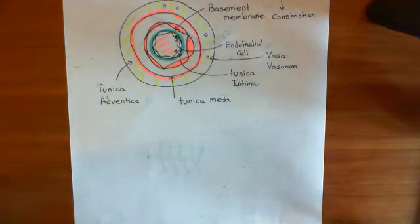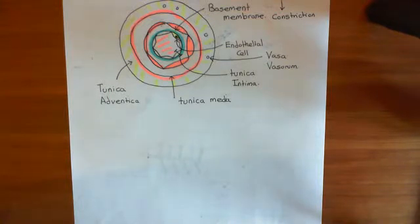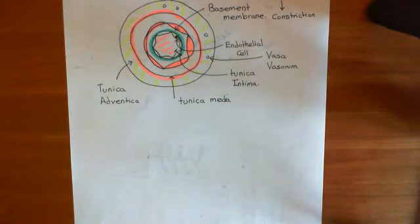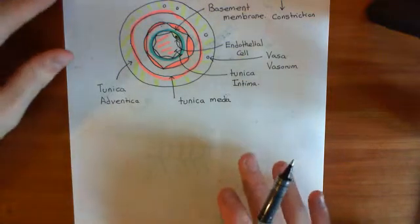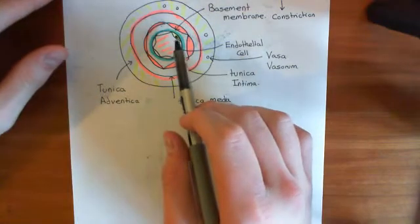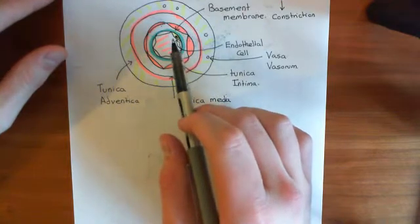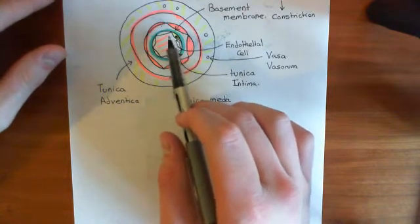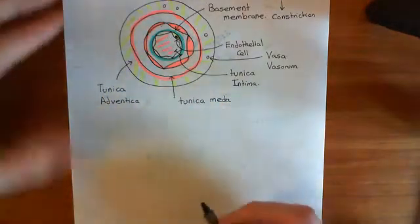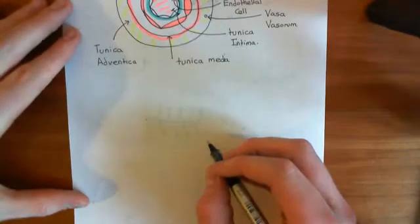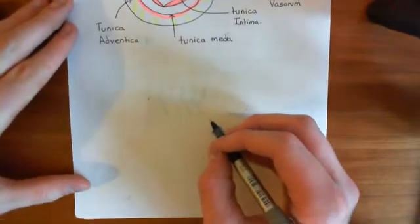Welcome to this next video in which we are discussing endothelium-derived relaxation factor, or EDRF. We now want to see what happens if we inject acetylcholine intravenously. Acetylcholine is going to act on the endothelial cells which line the lumen of the blood vessel. Let's draw one of these endothelial cells out and see what effect acetylcholine is going to have.